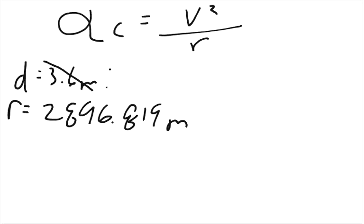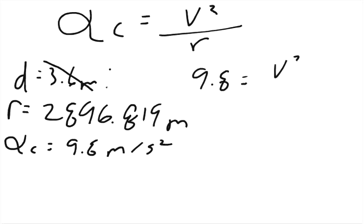Now we know that the acceleration needs to be 9.8 meters per second squared. So now we just have to solve for velocity. We have 9.8 equals V squared over 2,896.819.